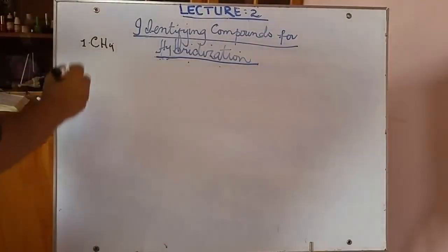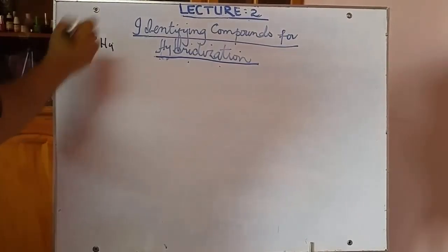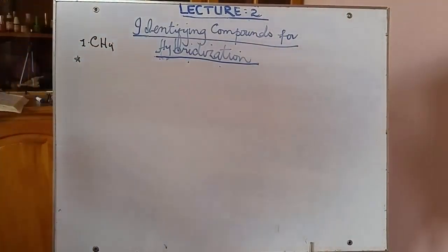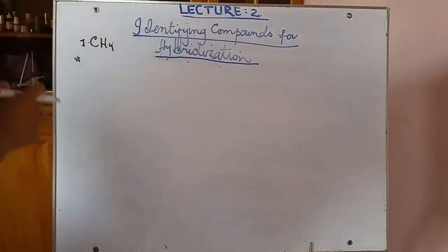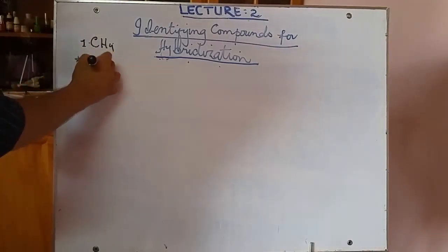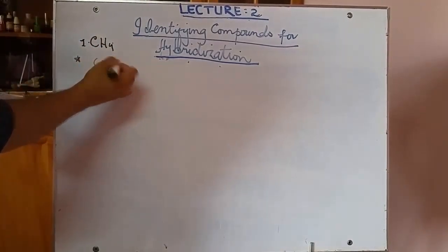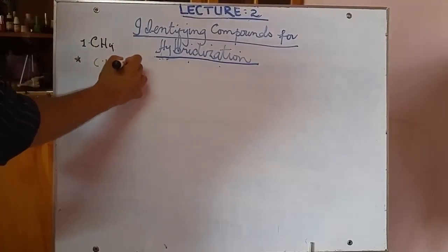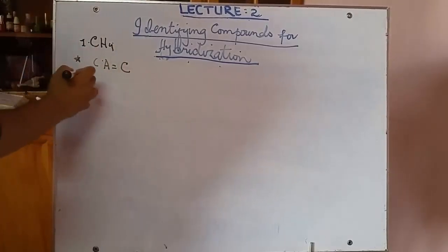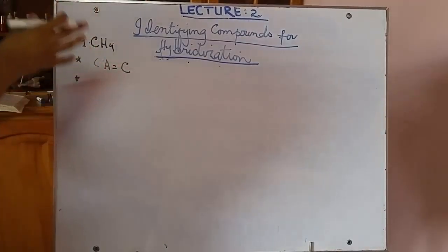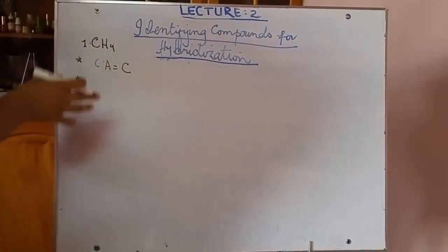Now we will move towards drawing the structure. For examination purposes, write all key points in a structured way. For methane: the central atom is carbon (it's least in number), so write 'central atom is carbon.' The second step is to draw the structural formula of methane.